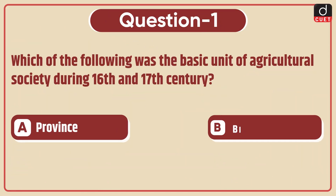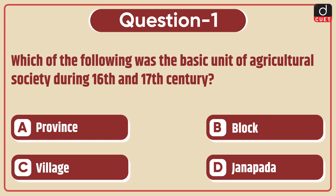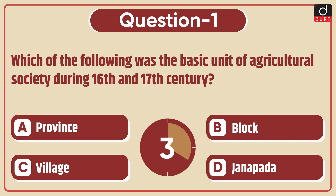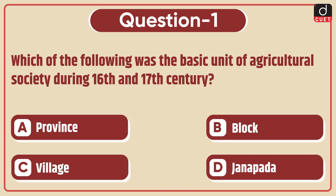Now let's begin today's session. First question: which of the following was the basic unit of agricultural society during the 16th and 17th century? Province, Block, Village, or Janpada? The correct answer is option C, Village.